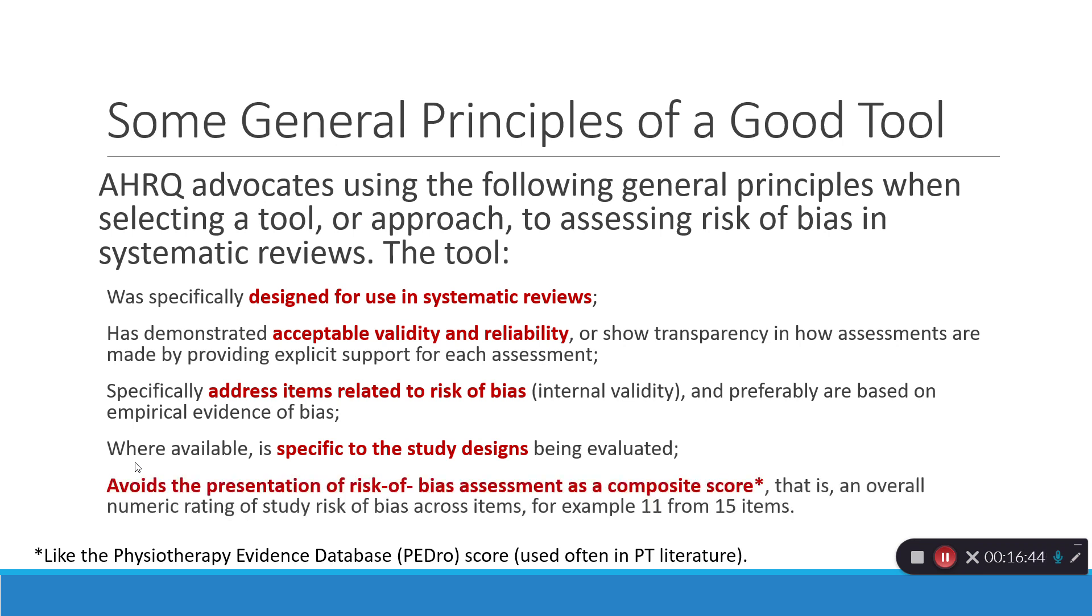Finally, you want to avoid the presentation of risk of bias as a composite score, a number, or a rating. The thing is, not all risk of bias questions are created equal. There are some that are critical flaws. You could have an otherwise great article, it makes one critical or fatal flaw, and boom, it is a high-risk study. So, when you just create a score like what you see, like the Pedro score, which is often used in physical therapy literature, they don't differentiate. All risk of bias characteristics are the same. And so, it kind of washes out the importance of some versus the others. We don't want to go that way.